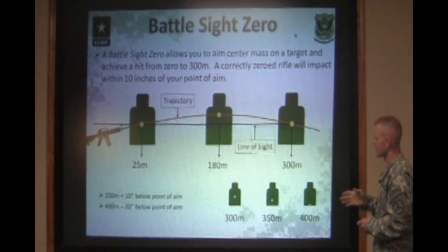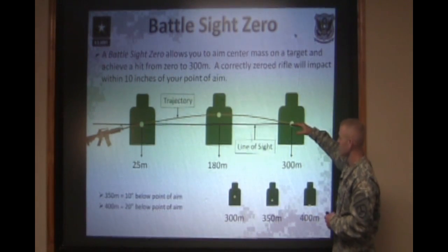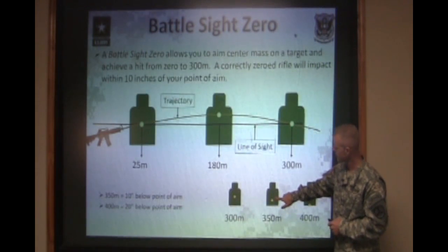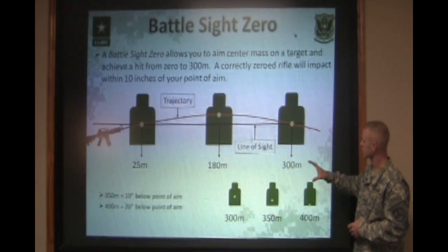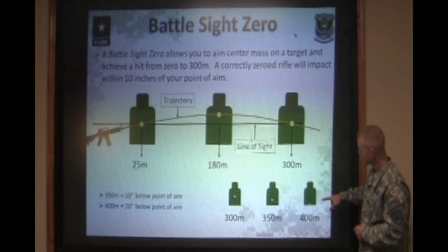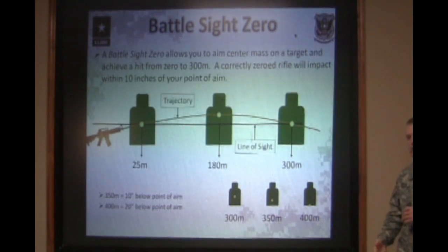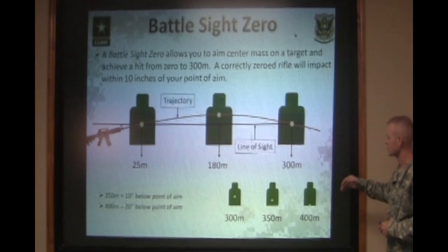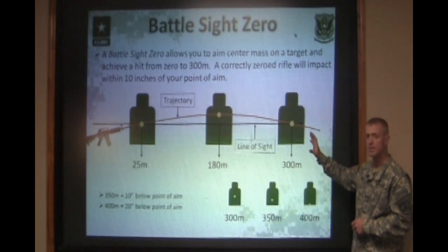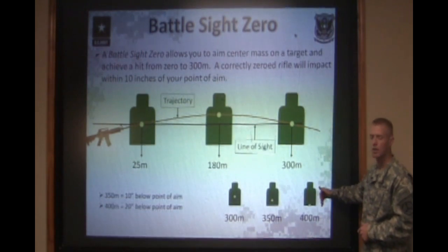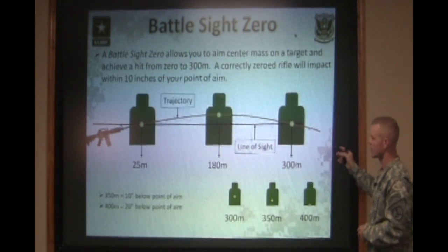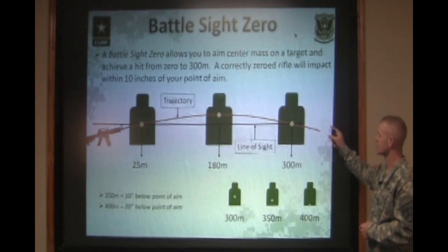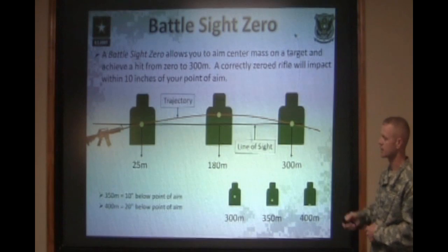At 300 meters, again your point of aim, point of impact. At 350 meters, you're going to be about 8 to 10 inches lower than your point of aim. And then at 400 meters, you're going to be a full 15 inches or so lower than your point of aim. You can still achieve a hit without manipulating the sights at all, but it's going to be lower out at 400 meters. This is just a representation of how that bullet flies through the air and where it will impact those targets at each distance.